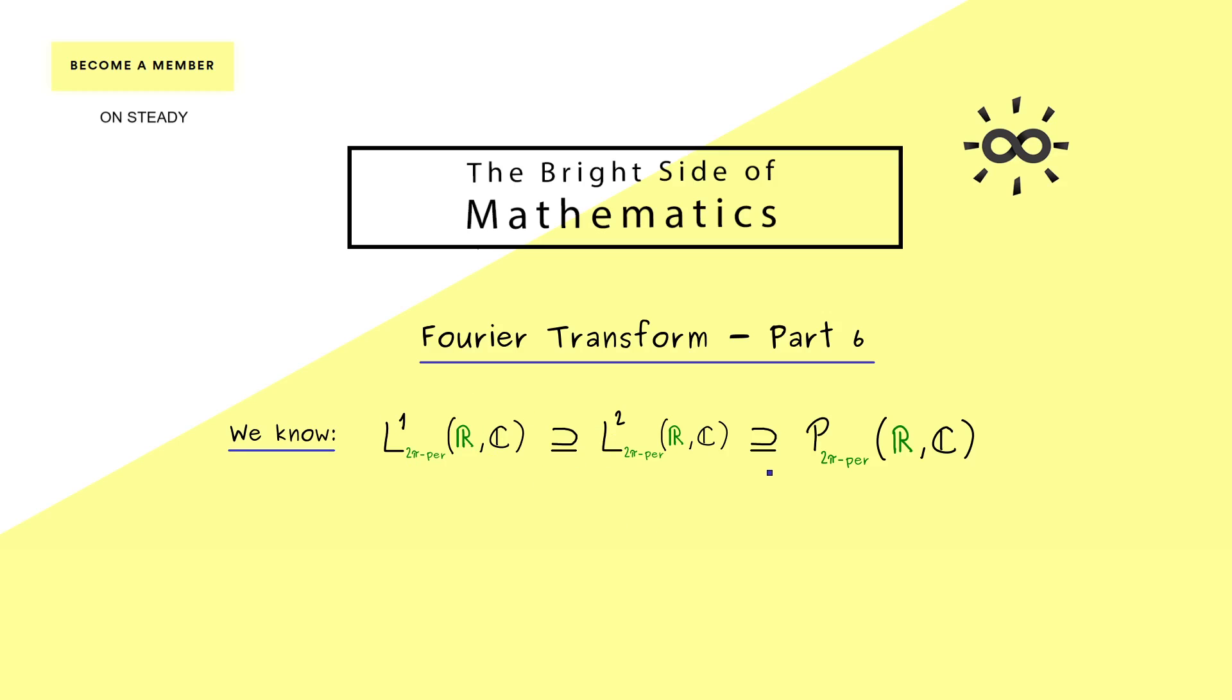It's not a general effect, but for the 2π periodic functions we have this inclusion here. And moreover, we also know that the trigonometric polynomials given by cosine and sine functions form a subset in both spaces here. And now what we will do in this video is to consider only these two spaces here. Because there we can use everything we know about orthogonal projections. The only thing we need for that is an inner product and we have that for L2.